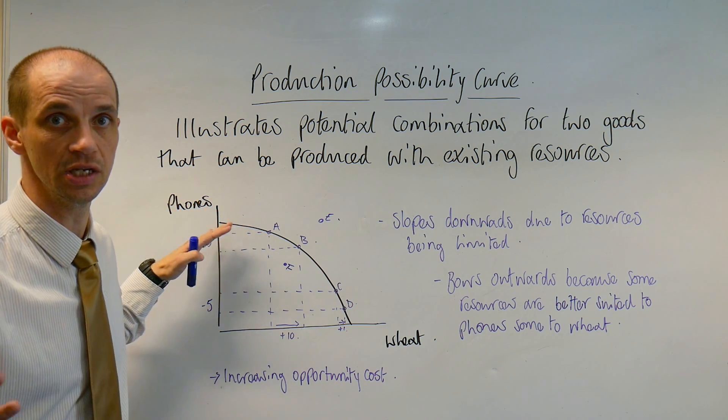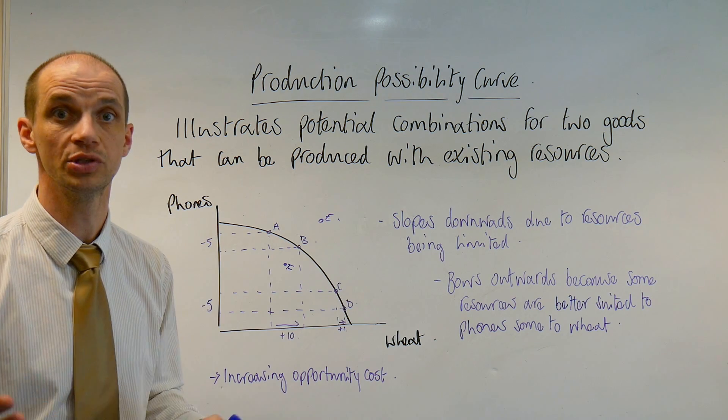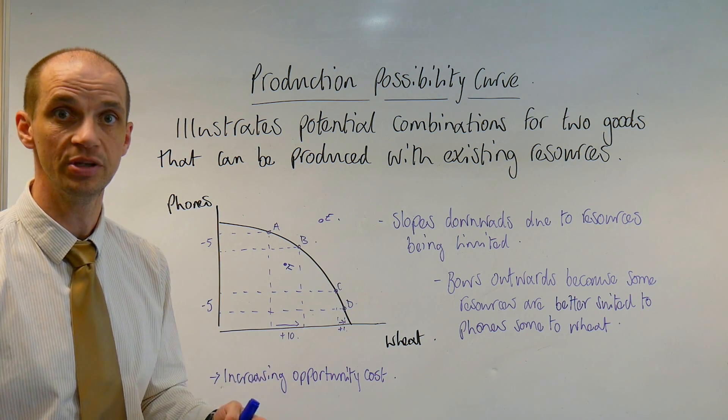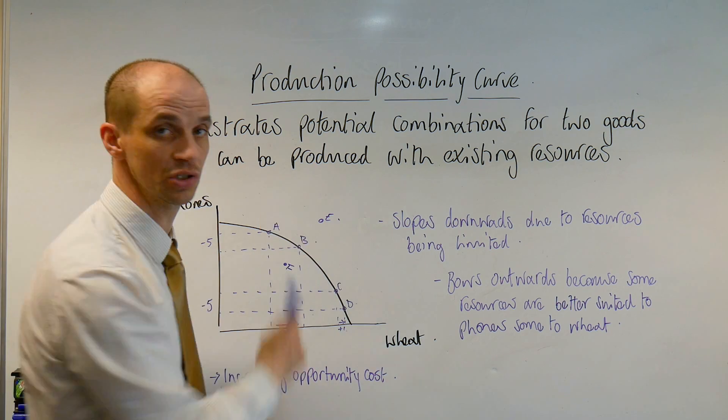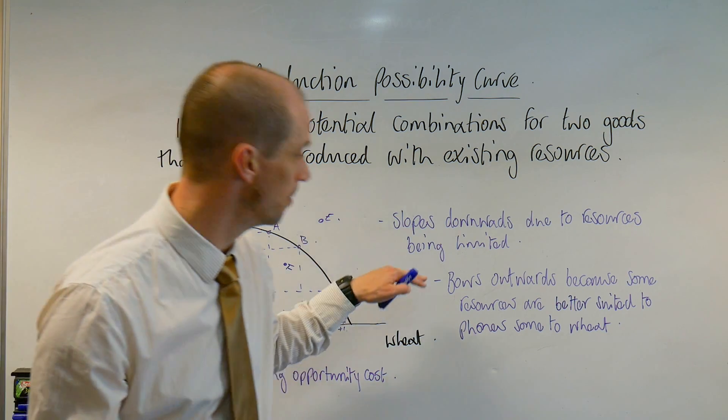Now all of these PPCs will slope downwards, they will slope downwards due to the fact that resources are finite, they are limited and as such they cannot therefore slope upwards. That just would not work of course.